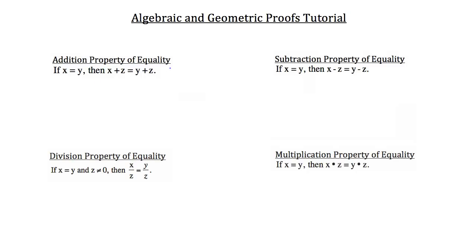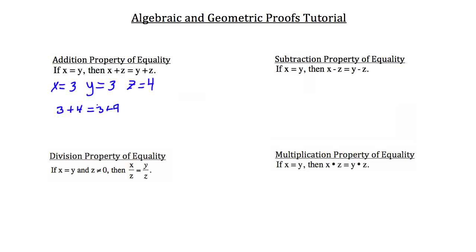Let's begin with the addition property of equality, which states that if x is equal to y, then x plus z must be equal to y plus z. For example, if x equals 3 and y equals 3, then x equals y. And if z equals 4, then according to the addition property, x plus z — 3 plus 4 — must equal y plus z, which is also 3 plus 4. So 7 equals 7.